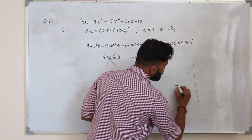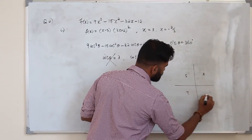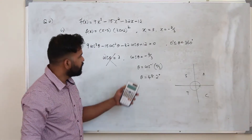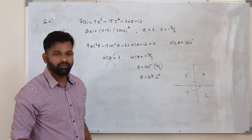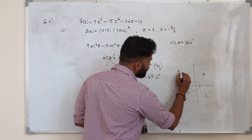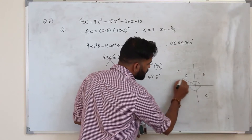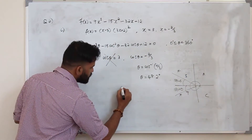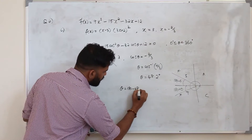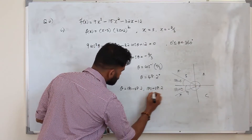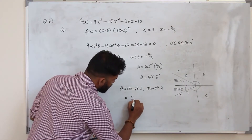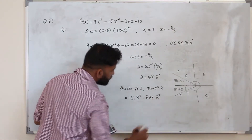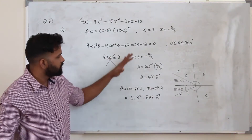Draw the ASTC diagram and look at the interval 0 to 360 degrees. Find the quadrants where cos theta is negative — that is the second and third quadrants. The formulas are 180 minus alpha and 180 plus alpha. So the two solutions are 180 minus 48.2 equals 131.8 degrees, and 180 plus 48.2 equals 228.2 degrees. That is how we solve this trigonometric equation.